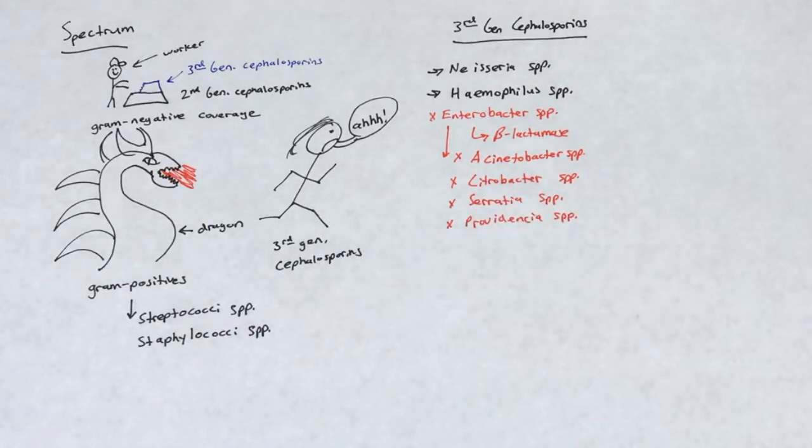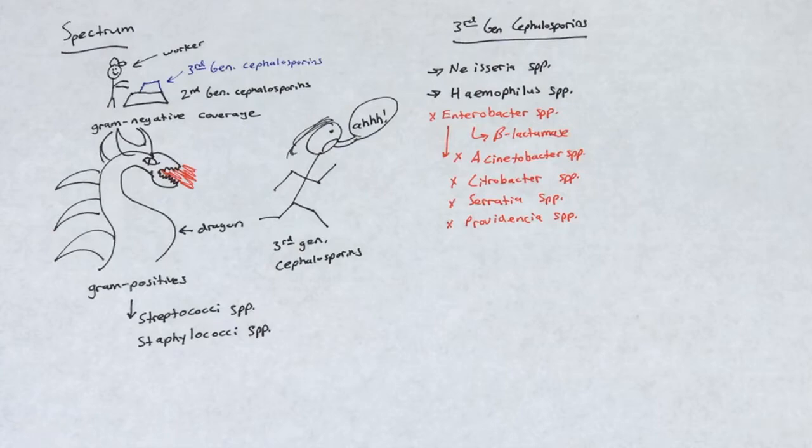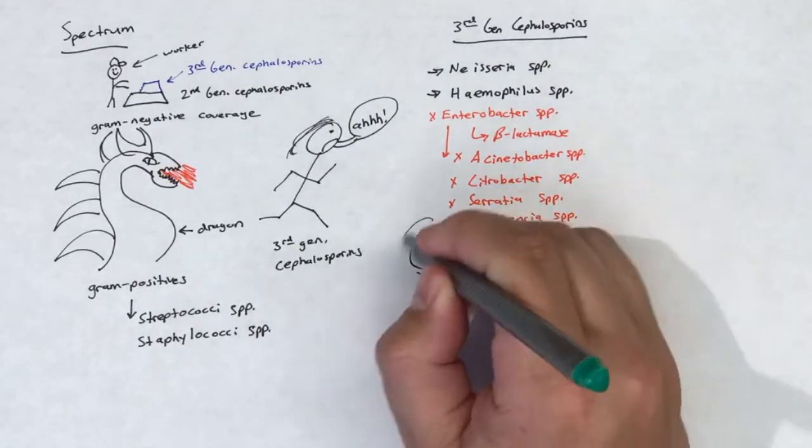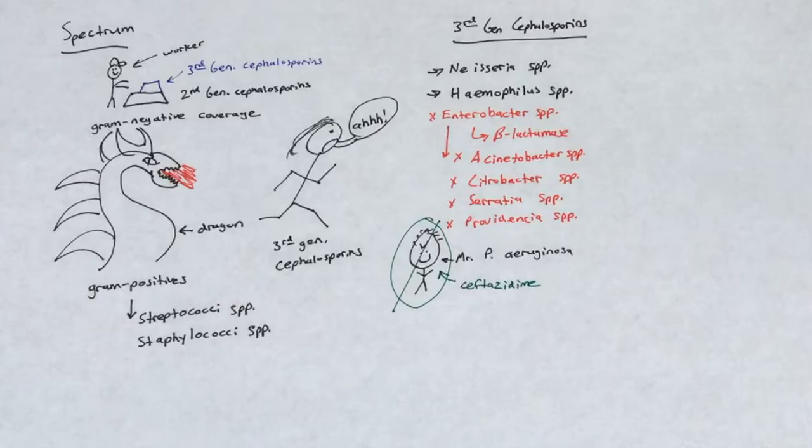Therefore, third-generation cephalosporins should not be used. It is important to note that ceftazidime is the only drug out of this group that is active against P. aeruginosa.